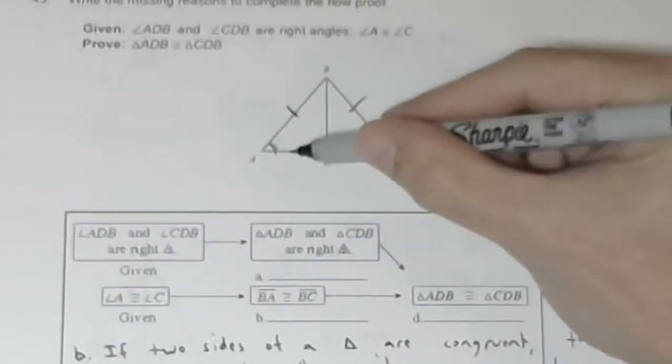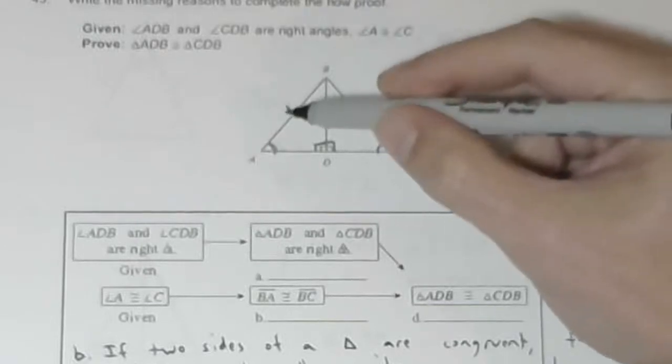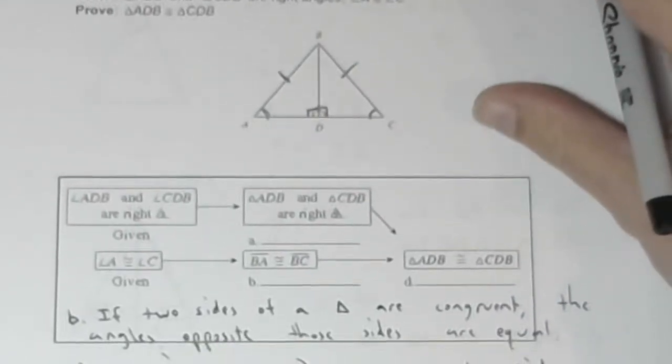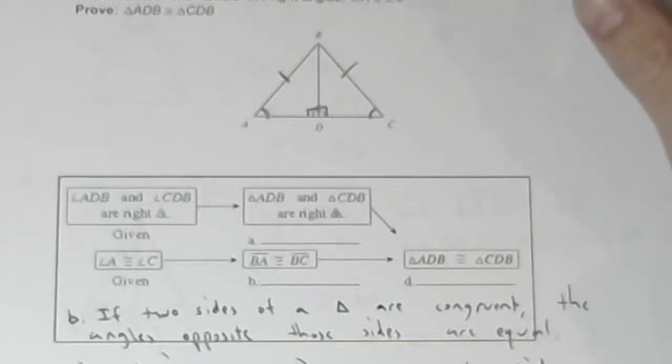If angle A equals angle C, if these base angles are equal, then AB equals BC. And I just wrote out the reason for that, which is if two sides of a triangle are congruent, the angles opposite those sides are equal.